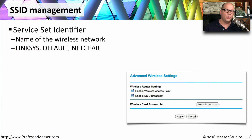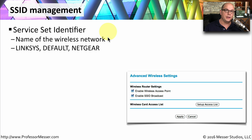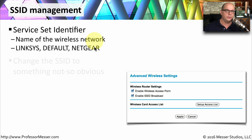If you're setting up a wireless access point or wireless router in your small office or home office, you want to be sure that you're managing the SSID properly. SSID stands for Service Set Identifier. When you're on your computer listing all of the available wireless networks, this is the name that's going to appear in that list. Some of the defaults you probably already have in your wireless access point are Linksys, Default, Netgear, and others. You may want to consider changing this SSID to something that's not quite as obvious, so you can still select it easily from a list, but other people won't exactly know where that network happens to be.